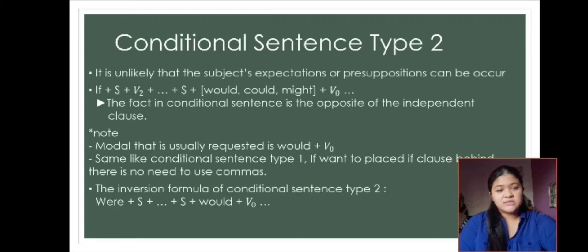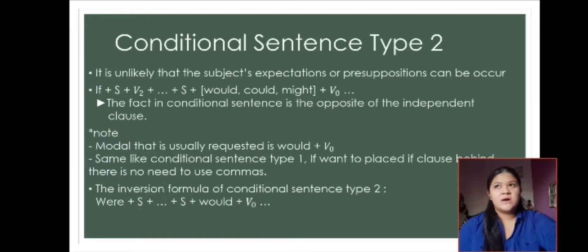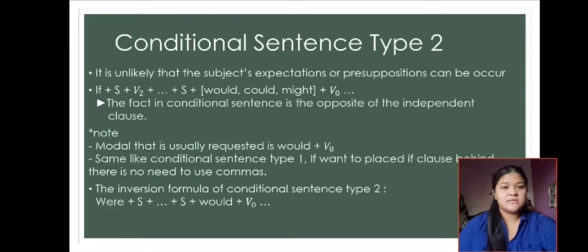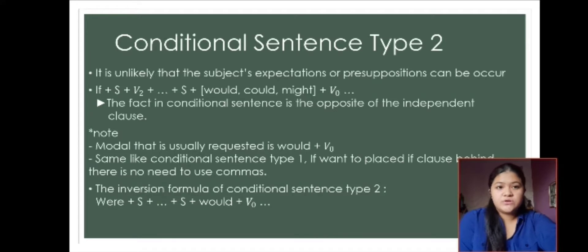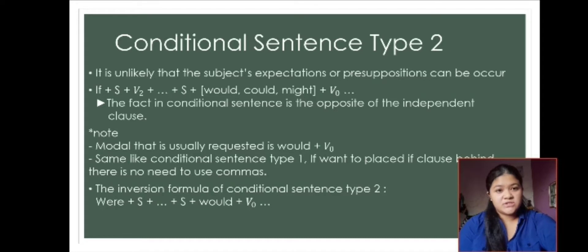Next is conditional sentence type 2. It is unlikely that the subject's expectation or proposition can be acquired. In type 2, what the subject has or does may or may not happen — it is 50-50. The formula is: if + subject + verb 2 + complement + subject + would/could/might + verb 0. The fact in conditional sentence type 2 is the opposite of the independent clause.